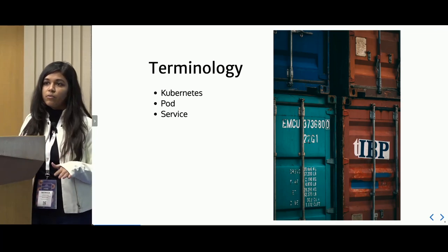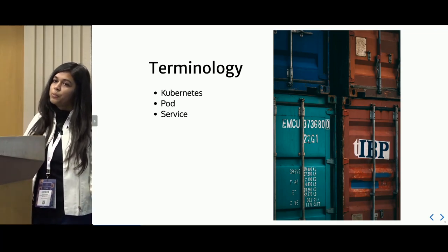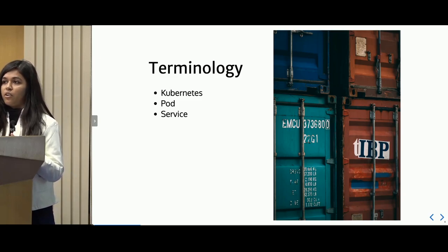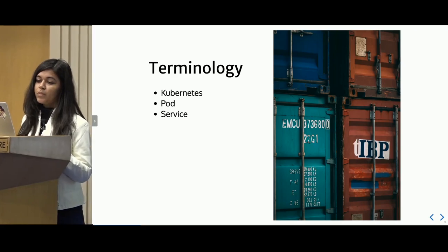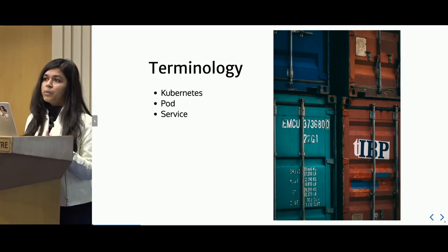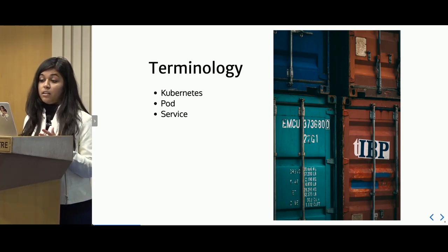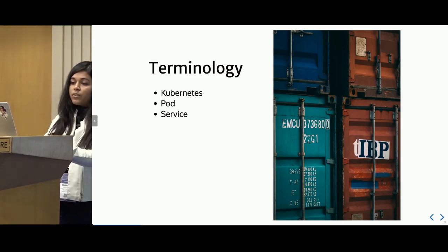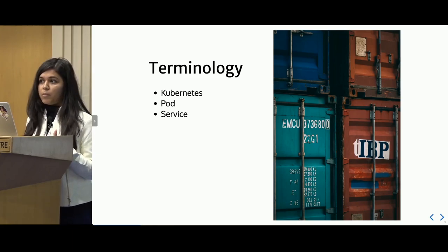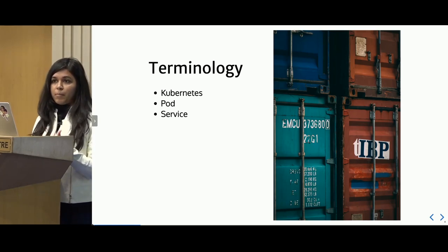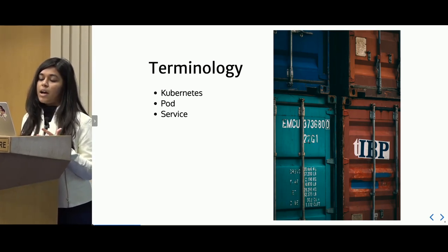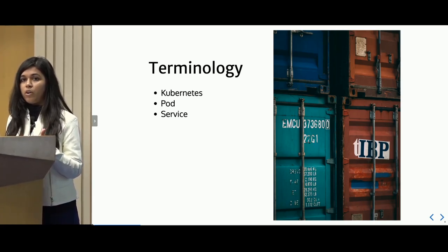A little bit of terminology we'll be following. Kubernetes is the state-of-the-art container orchestration system developed by Google and is now open source. A pod is a very basic unit in Kubernetes — it is the specification for how your containers will run, a collection of containers which share a network and storage space. Pods are ephemeral, always coming up and going down. A service is another abstraction over a pod — it's how you expose your pod to external traffic.